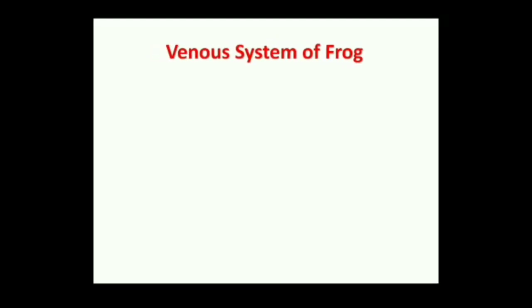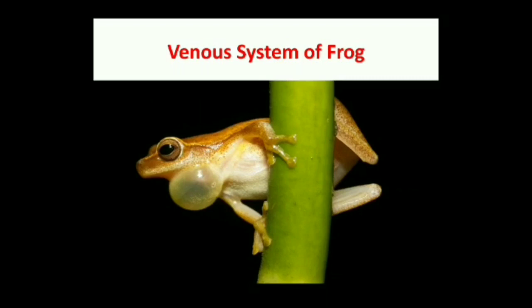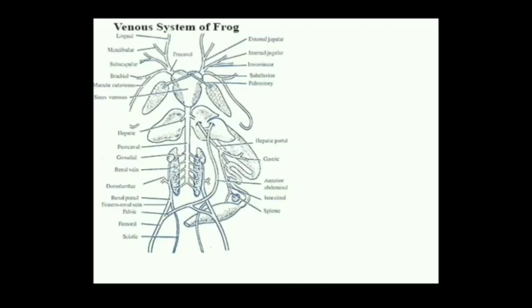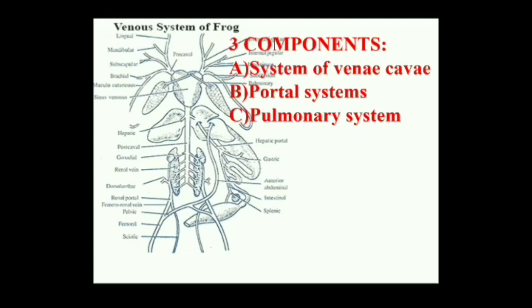Good morning friends. Today I am here to explain the venous system of frog. As you all know, all the veins present in our body make up our venous system. Veins are called collecting channels of the body because they collect blood from various body parts and supply it to the heart. The venous system of frog consists of three components: the system of vena cava, portal systems, and pulmonary system.